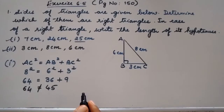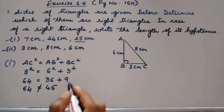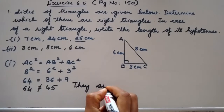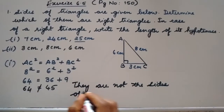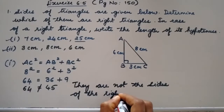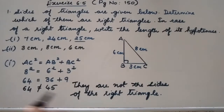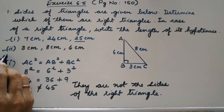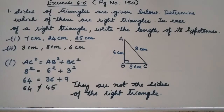Since 64 is not equal to 45, these are not the sides of a right triangle, and we cannot find the hypotenuse. On page 150, there are two more problems — problem number 3 and 4 — which are homework problems. Thank you, students.